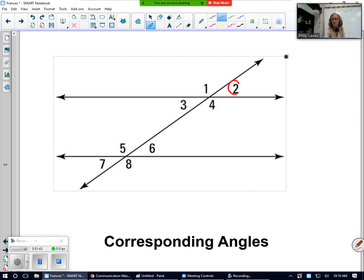Let's look at angle 2. Angle 2 is above this parallel line and it's to the right of this transversal. Remember this is the transversal. Let's do a red line like that.